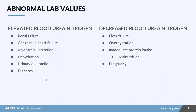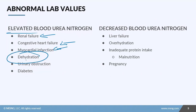If we get our labs back and the BUN is elevated, we're going to look to the kidneys first — making sure they're working properly. If they're not, we can expect some sort of kidney failure or kidney disease. You're also going to see elevated BUN in congestive heart failure, myocardial infarction, and very commonly in patients who are dehydrated. Urinary obstruction and diabetic patients can also show increases in their BUN levels.